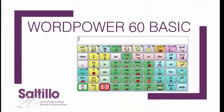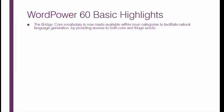WordPower 60 Basic is a robust vocabulary addition to the WordPower family. It is designed to support language development and bridge the gap between core and fringe vocabulary. WordPower 60 Basic creates a bridge to core vocabulary within the noun categories. Core is embedded to facilitate natural language generation.